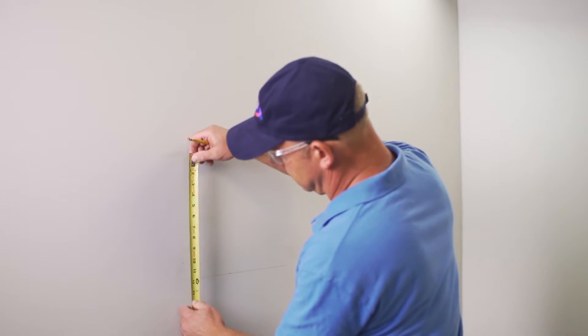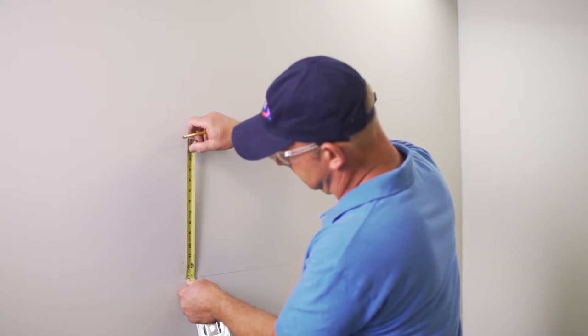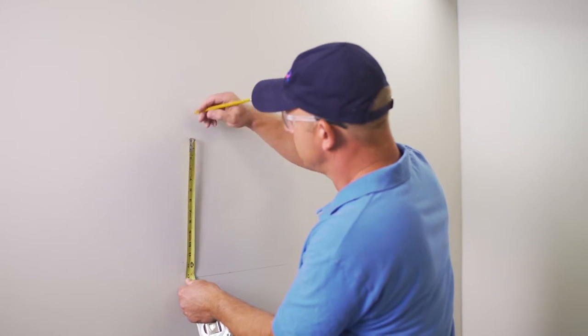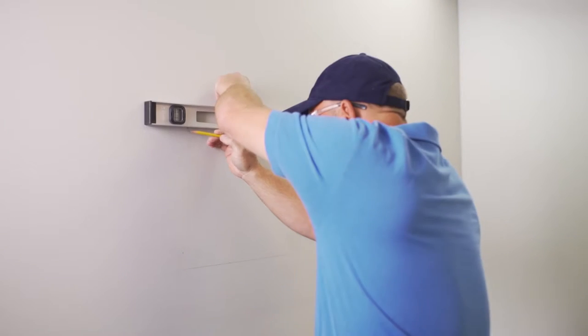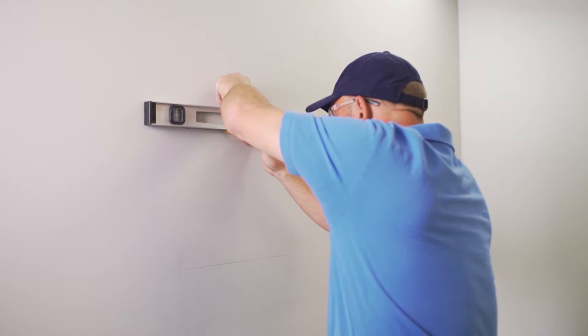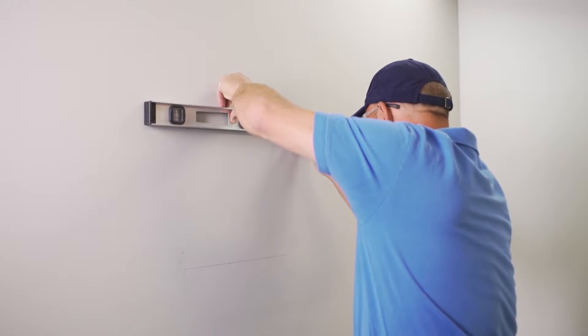Measure up 13 and a quarter inches from the level line. This will be the top of the hole cutout. Draw a level line at the mark from the bottom edge of the cutout, between the inside edges of the stud cavity.